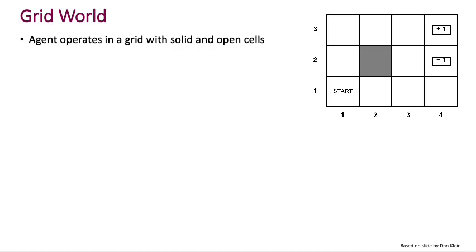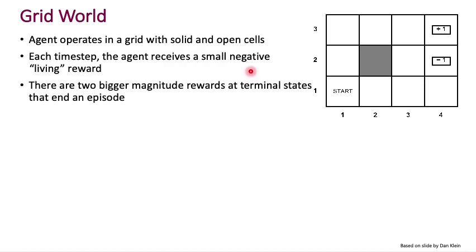Here is a very toy example of a Markov decision process. We have this grid of cells. One of those cells happens to be occupied and the other cells are free. The agent starts at this location and has to navigate this grid of cells. It's going to receive at every time step a small negative reward — a penalty — for every time instant spent in the grid. Its aim is to complete the task as quickly as possible so that it doesn't accrue this negative reward over time.